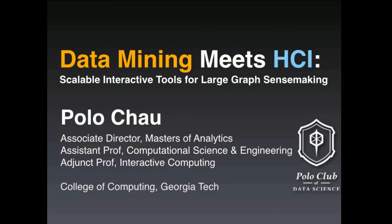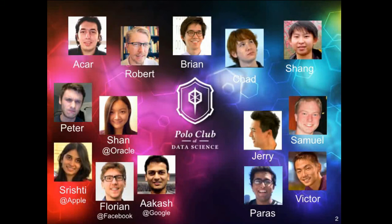Today I'm going to talk about research that's happening at my group, specifically on the work that is combining data mining and human-computer interaction — HCI — about how to create scalable tools that are helpful for people to make sense of large graph data or network data. A lot of the work I'm presenting today is from my group, the Polo Club of Data Science — the last time to ever name anything after myself. The top row is PhD students and a master student on the left, and an undergraduate student on the right. I'm here just as the salesperson doing publicity for them.